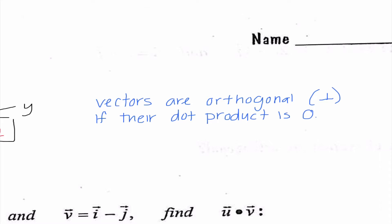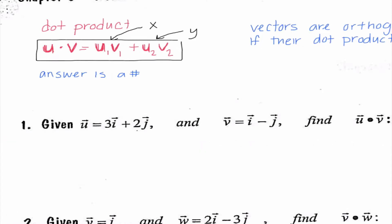So we're going to practice finding the dot product a lot today. The other thing we need to know is that vectors are what we call orthogonal — and that really is like being perpendicular — if their dot product is equal to zero. Today we're going to be finding a ton of dot products, and what you'll find is our math is going to be really easy. The key thing is for us to remember how to actually figure out what the dot product is.